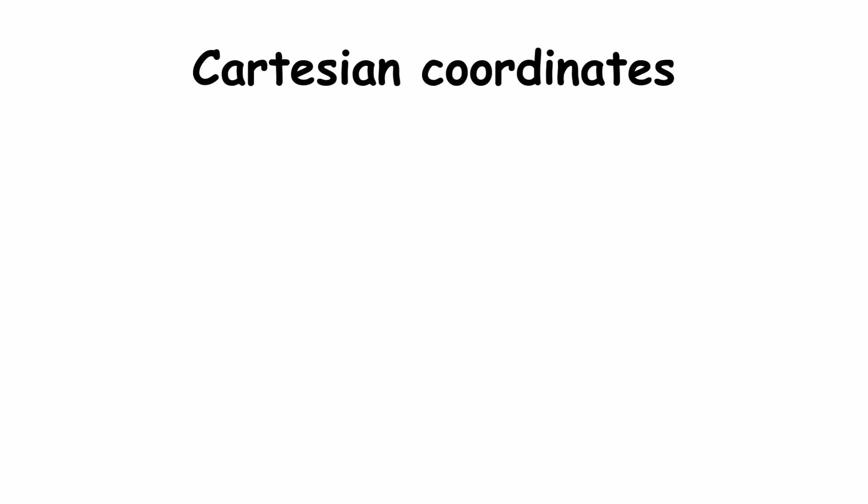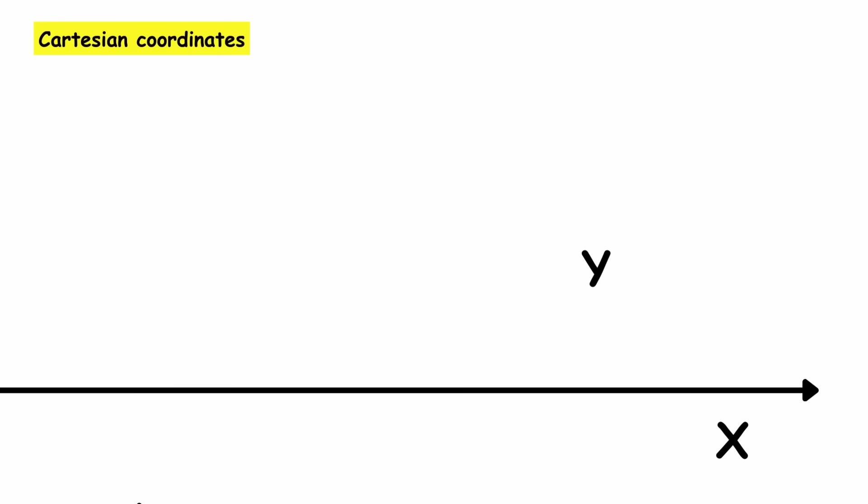You may know about Cartesian coordinates, x and y. x tells you how far horizontally to go, and y tells you how far vertically. Another way to label points in 2D space is polar coordinates.